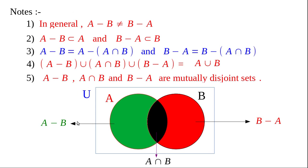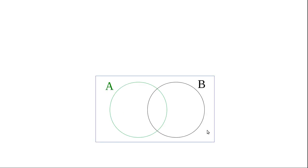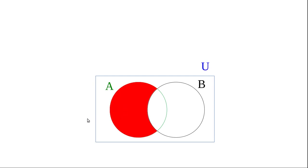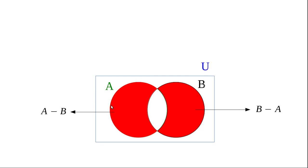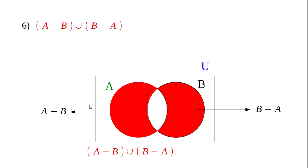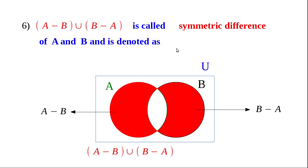Sixth note: see the Venn diagram. This portion is A minus B and this portion is B minus A — both shaded the same color to form a single combined set. A minus B union B minus A has a special name: it is called the symmetric difference of A and B, denoted A Δ B. So A Δ B equals A minus B union B minus A.